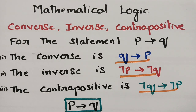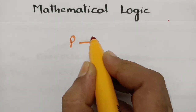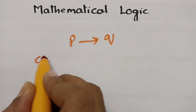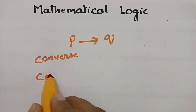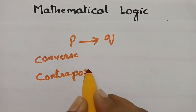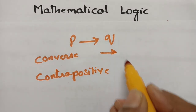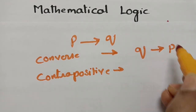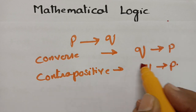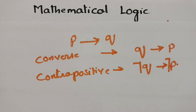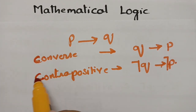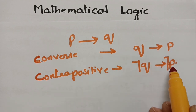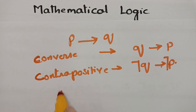Let me tell you how to remember this. For implication P implies Q, notice that C is for converse and C is also for contrapositive. For both C's — converse and contrapositive — remember that it will be Q implies P. For contrapositive there will be negations added, and for inverse the direction stays the same: P implies Q with negations.